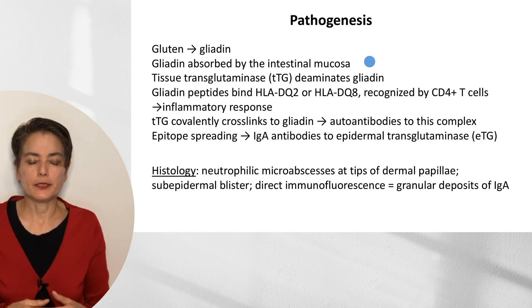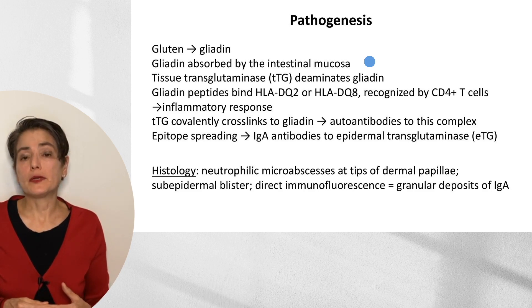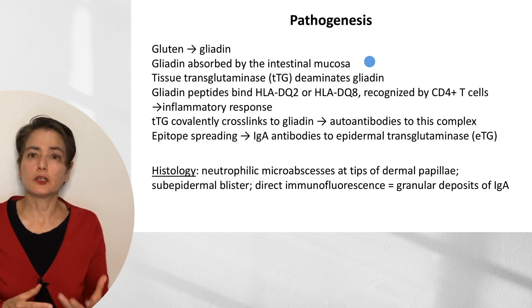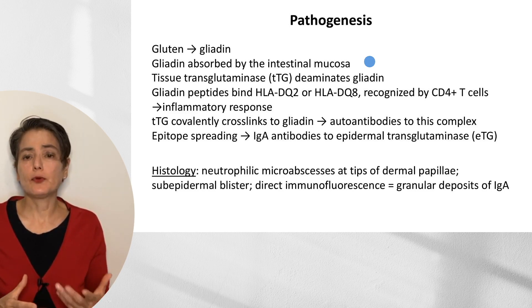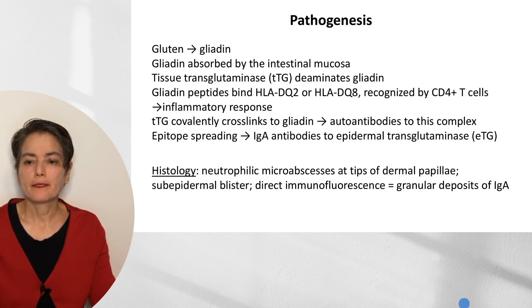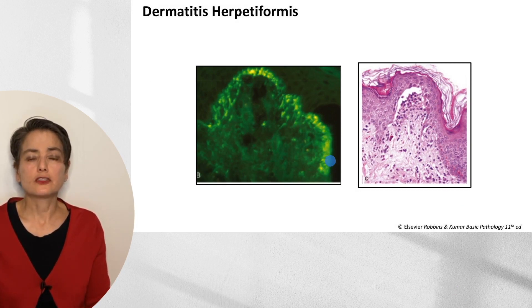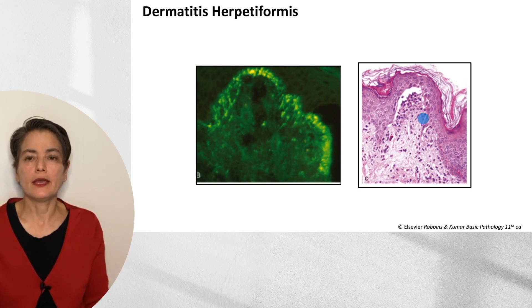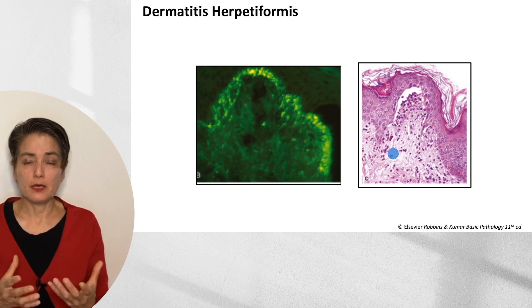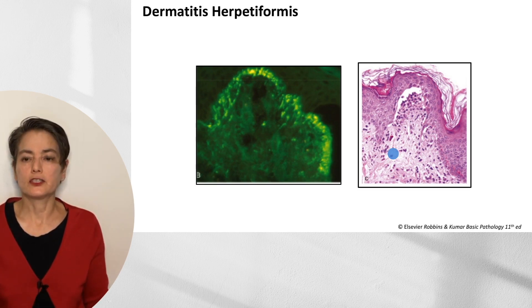Why does dermatitis herpetiformis appear in some individuals with celiac disease but not all, and why does it show up later? It's thought to be due to epitope spreading: initial IgA antibodies form to tissue transglutaminase, then through epitope spreading, antibodies develop to a similar protein called epidermal transglutaminase, located in the epidermis. Histologically, we see neutrophilic micro-abscesses at the tips of the dermal papillae, forming a subepidermal blister. Direct immunofluorescence shows granular deposits of IgA — you can see the granular appearance of the IgA and the classic neutrophilic micro-abscess at the tip of the papilla.